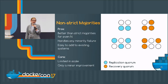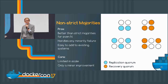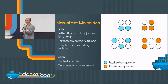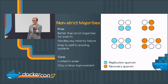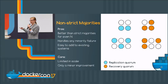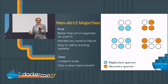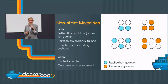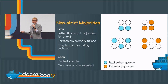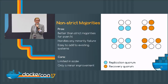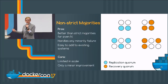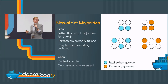So the first thing we can do to apply this result is to switch from strict majorities to non-strict majorities. If you happen to have an even number of machines, you can reach replication by talking to exactly half of them. And when it comes to recovery, you can use the normal majorities you would have used before. This is just better than what we were doing before — there is no downside. You've just reduced a quorum.